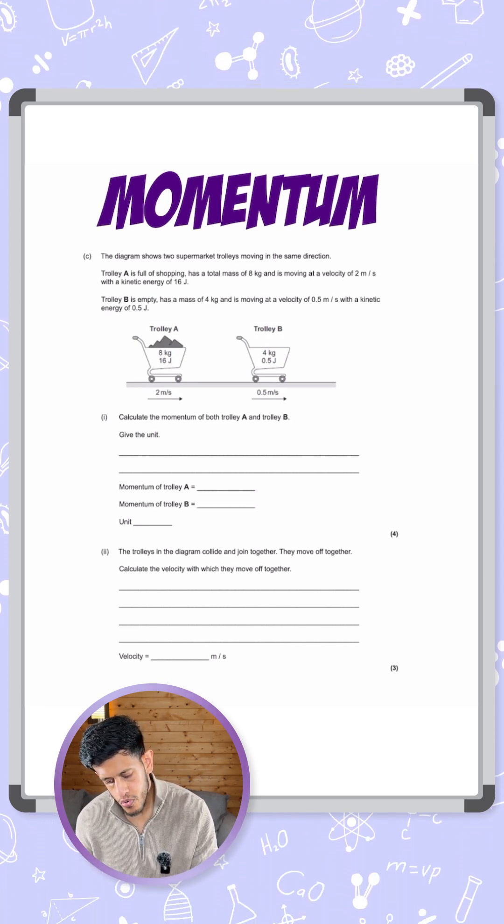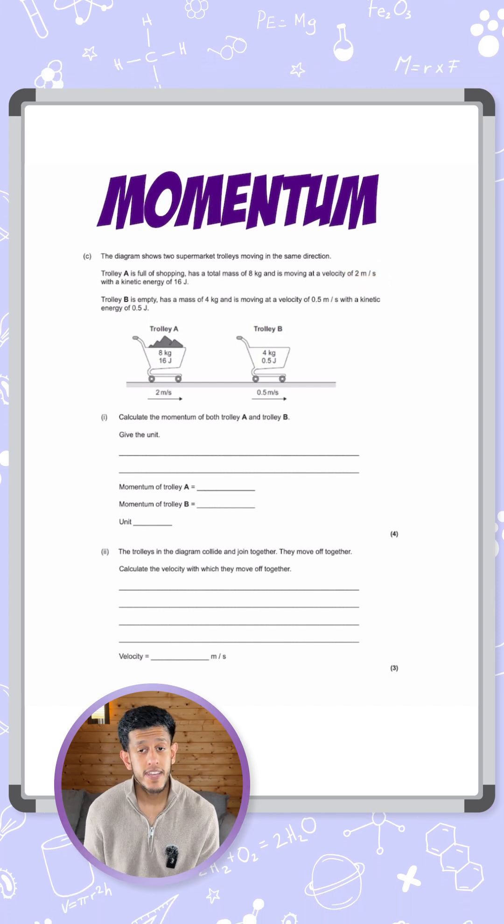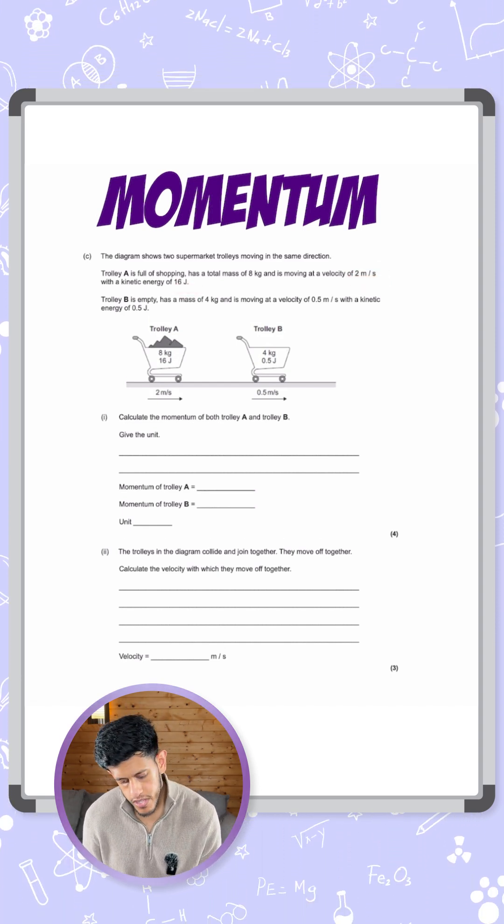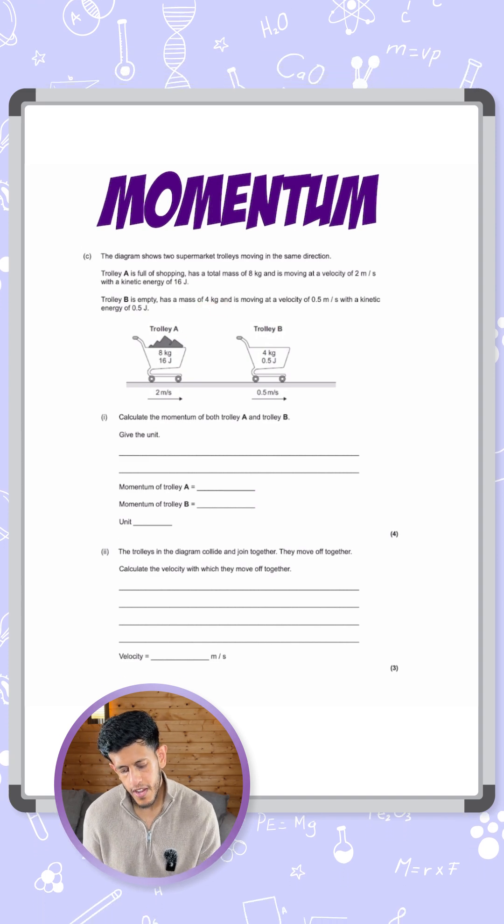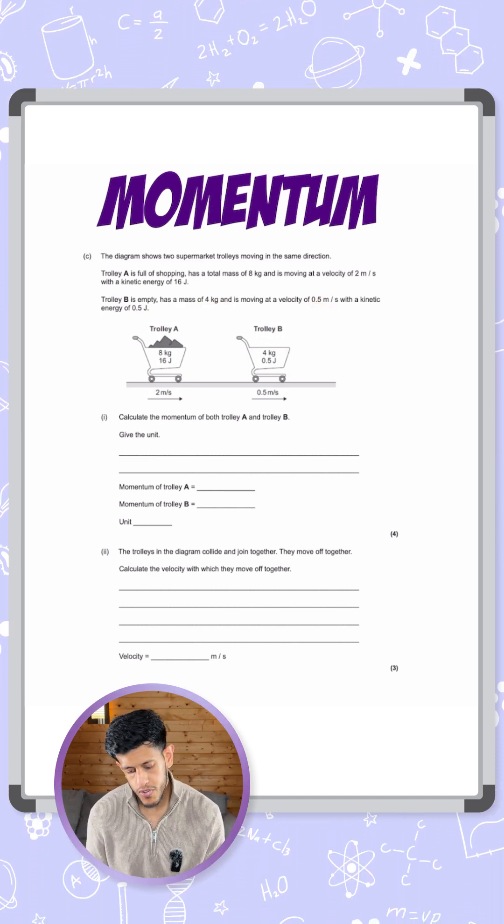Trolley A has a total mass of 8 kilograms and is moving at a velocity of 2 meters per second with a kinetic energy of 16 joules. Trolley B is empty so it has a mass of 4 kilograms and is moving at a velocity of 0.5 meters per second with a kinetic energy of 0.5 joules.